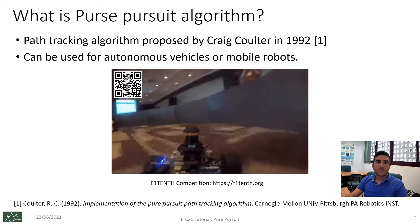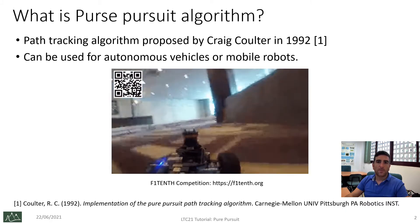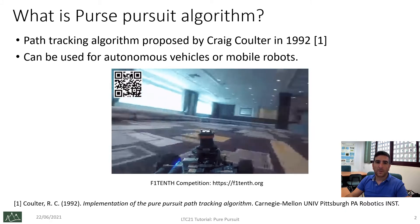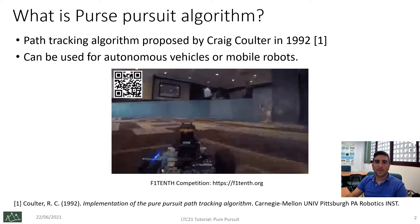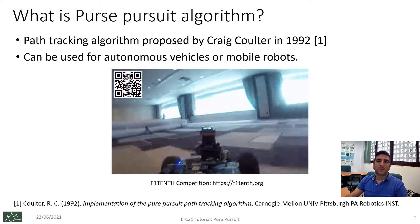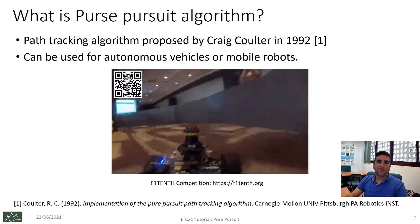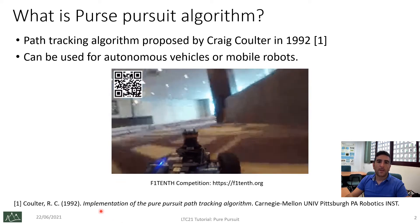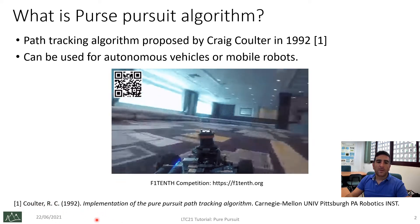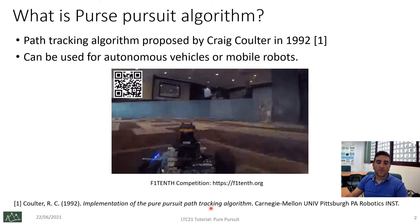Well, what is pure pursuit algorithm? The pure pursuit algorithm is a path tracking algorithm proposed by Craig Coulter in 1992. It is not something new, but it's very effective for path tracking. Here you can find the original technical notes for its implementation.